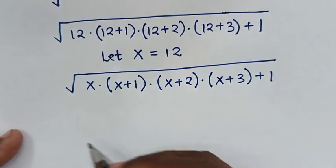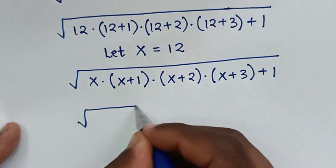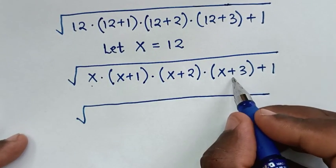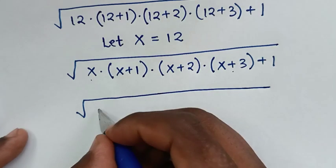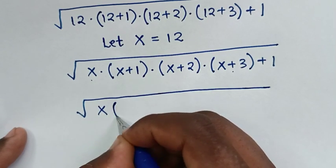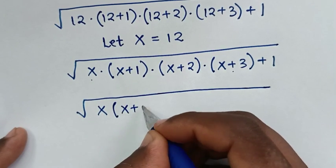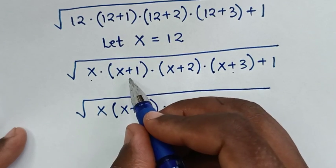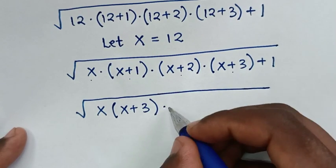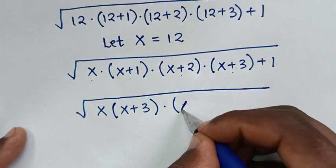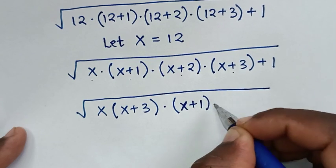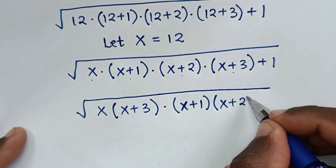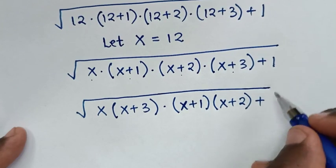In the next step, we take x times (x plus 3) as one group, and (x plus 1) times (x plus 2) as another group, then plus 1.